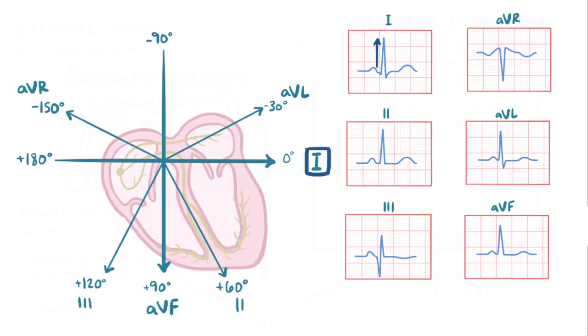Lead 1 here is clearly positive, which means that the axis is somewhere over here. And lead AVF is positive as well, putting the axis in the lower left quadrant between 0 and plus 90 degrees, which is a normal axis.